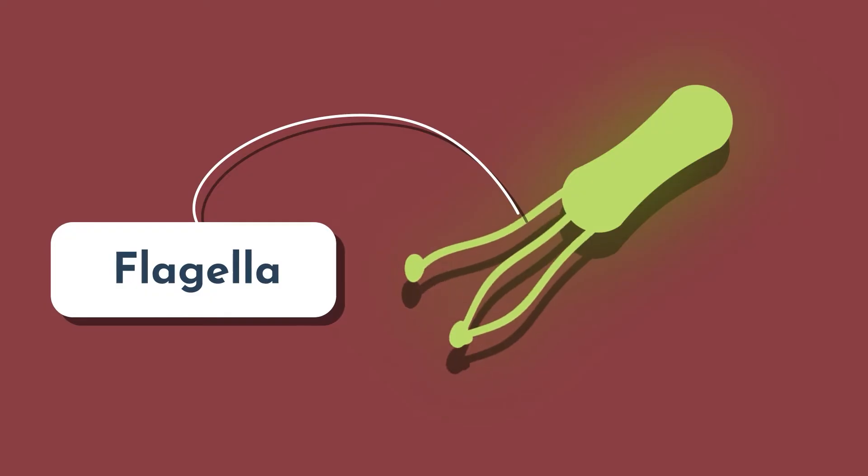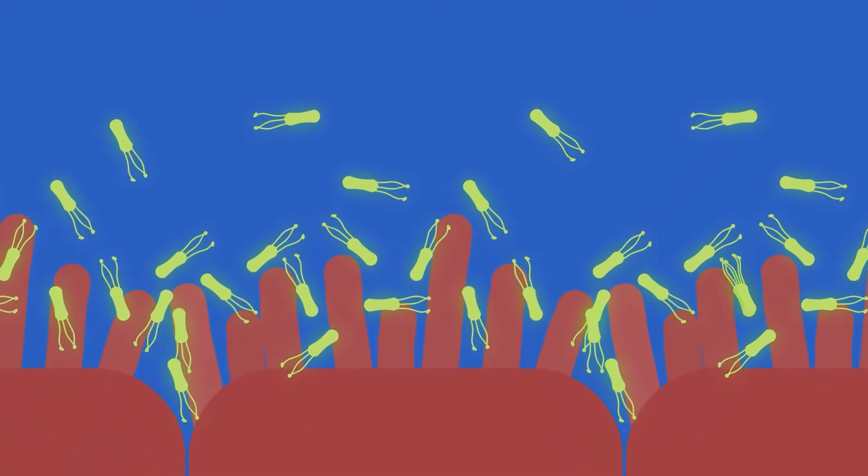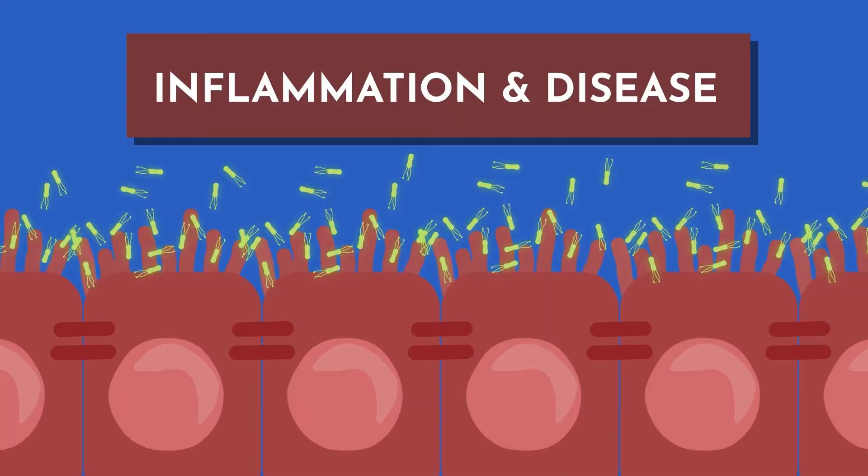H. pylori's flagella allow it to move toward the stomach lining cells, where it attaches, releases toxins, and causes inflammation and disease.